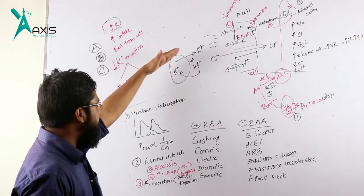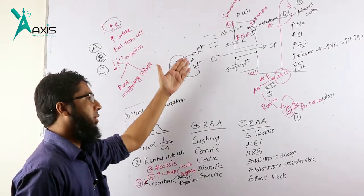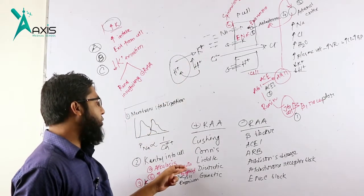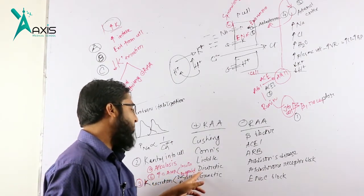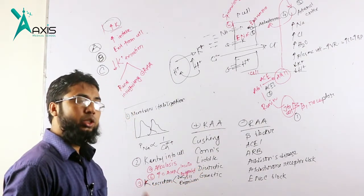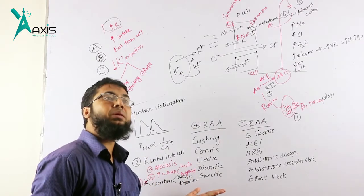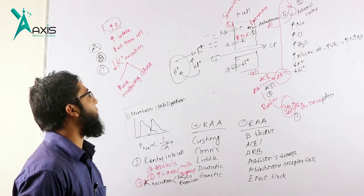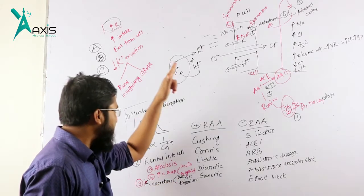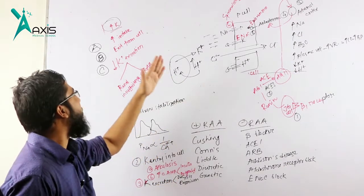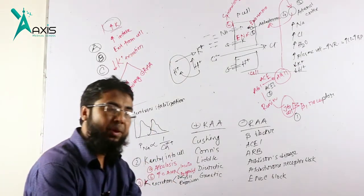Another factor causing potassium exit from the cell is lack of cyclic AMP. Insulin increases cyclic AMP, so if there is lack of insulin, potassium will exit from the cell. Beta agonists also increase cyclic AMP, so beta blockers will prevent this and cause potassium exit. Therefore, insulin lack, beta blocker use, and metabolic acidosis will all cause exit of potassium from the cell, ultimately leading to hyperkalemia.